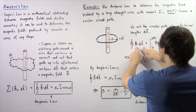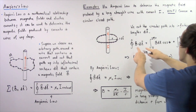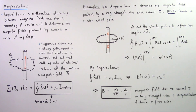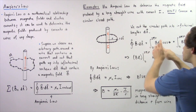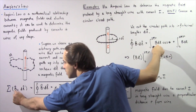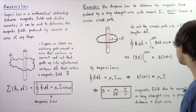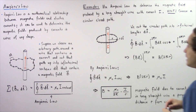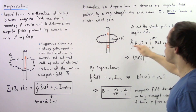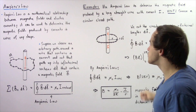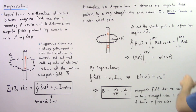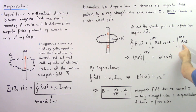By the definition of the dot product, the dot product of two vectors equals the product of their magnitudes multiplied by the cosine of the angle theta. The angle theta between B and DL is zero degrees, because the magnetic field we choose is parallel to the segment. Cosine of zero is one, so this simply becomes the closed integral from zero to 2πR of B·DL.